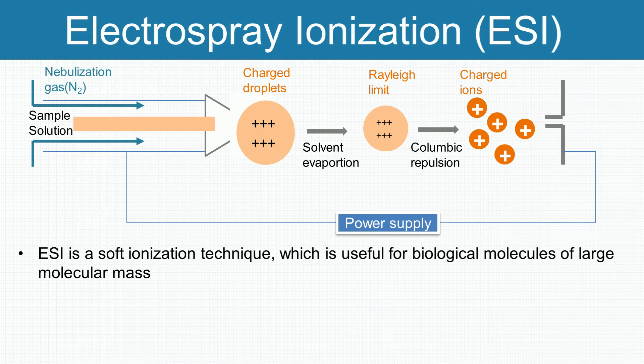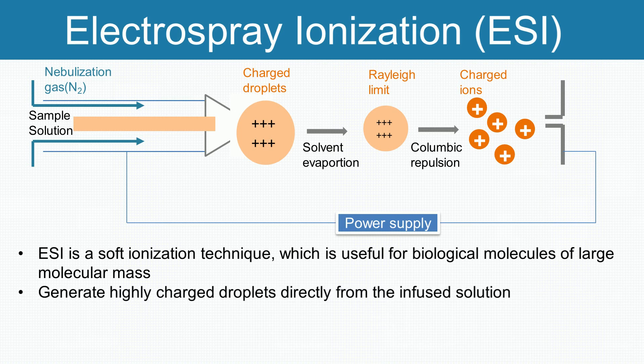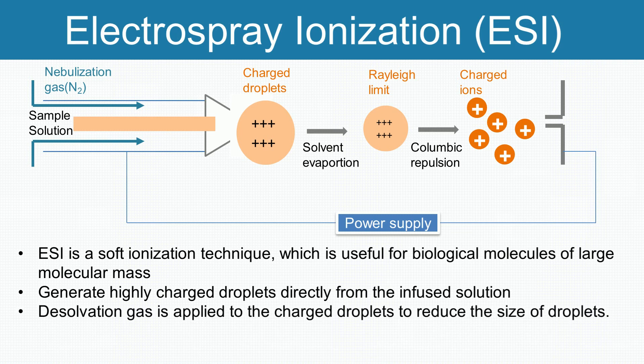Electrospray ionization uses an electrical stress between the probe exit and the counter electrode. The process results in the generation of highly charged droplets directly from the infused solution. With the help of another stream of heat or dry gas, which is called desolvation gas, the charged droplets are continuously reduced in size by evaporation of the solvent, leading to an increase of surface charge density and the decrease of the droplet radius.